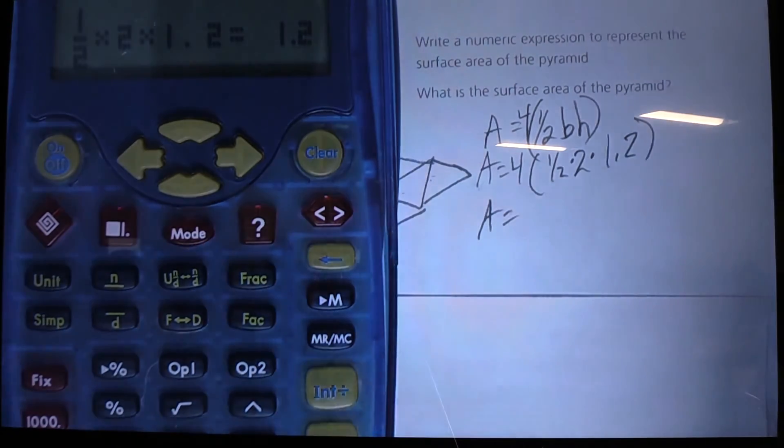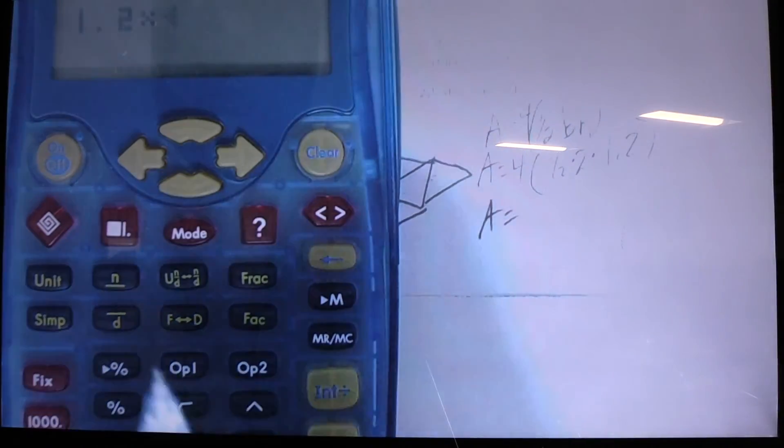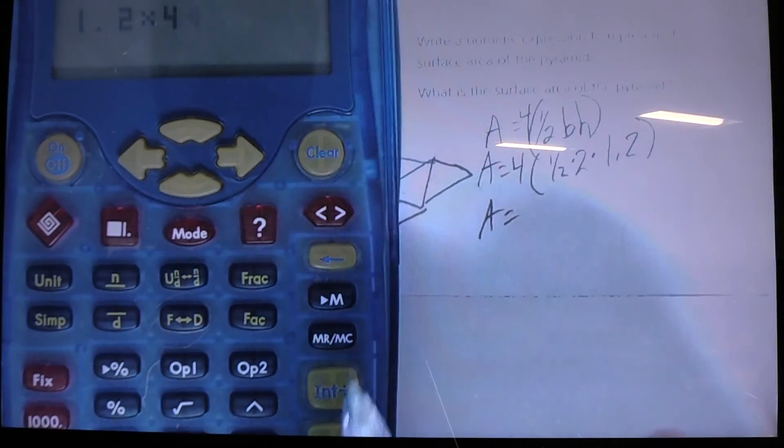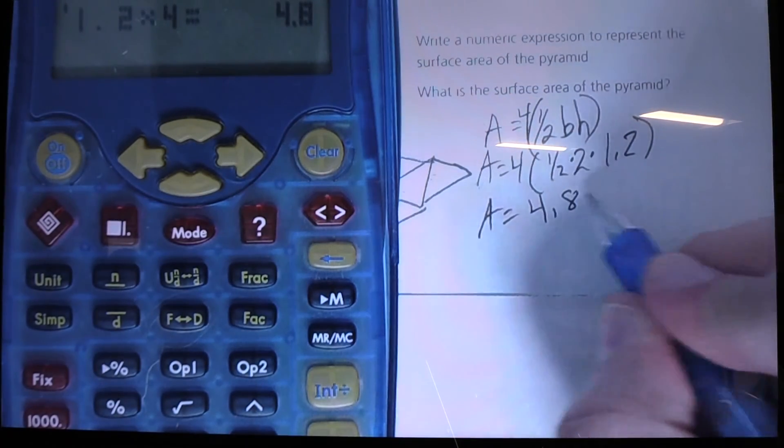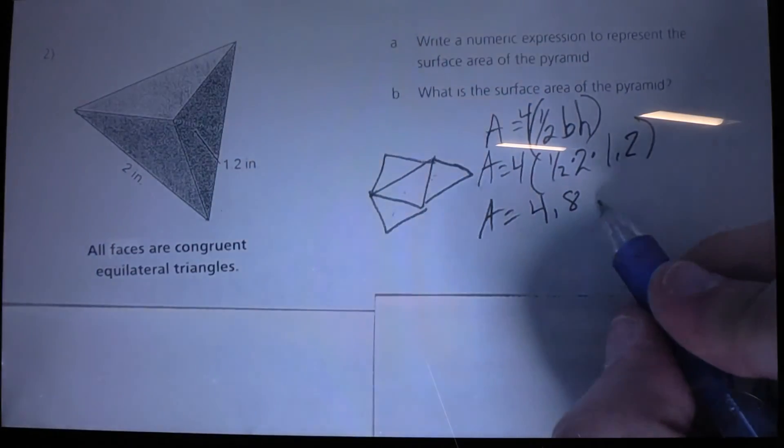Now, I expected that. Now, I'm going to say times 4, because we have 4 equilateral triangles, and it's going to give me 4.8. So, 4.8 and that is inches square.